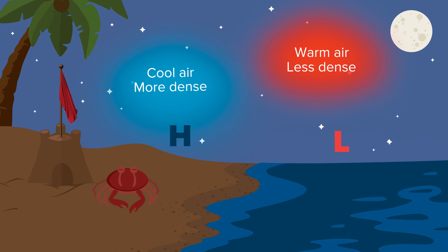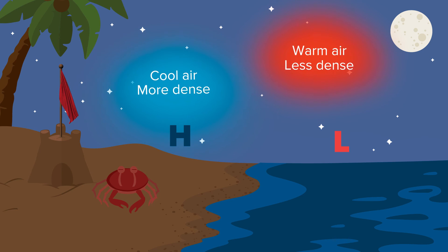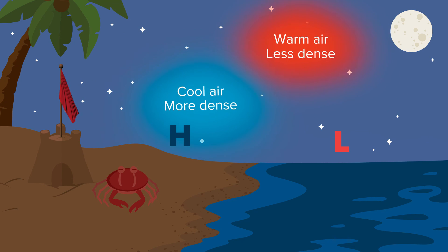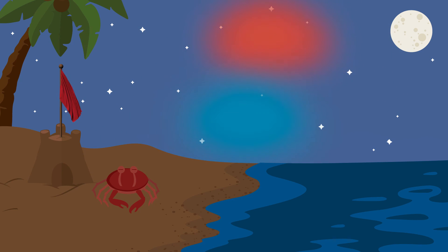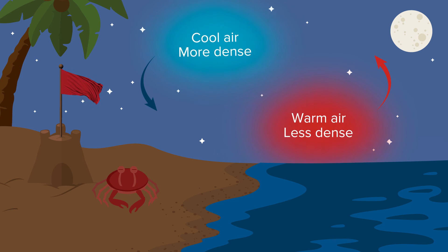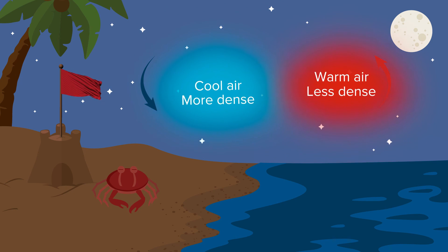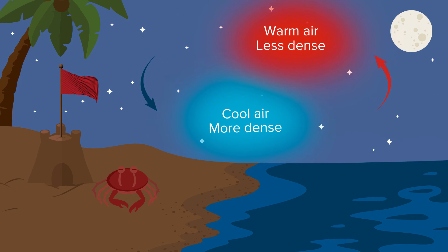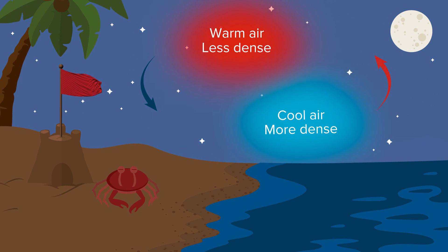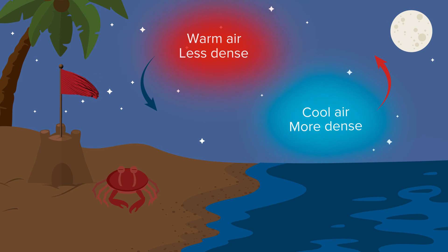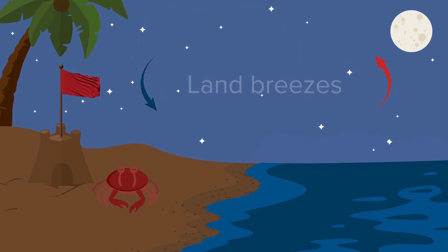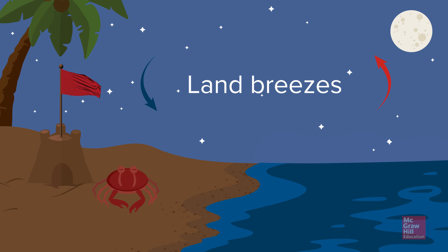At night, cool air over land moves towards the lower pressure over the ocean. This air is warmed by the water and rises, and the cycle continues. Winds that blow from the land to the sea are called land breezes.